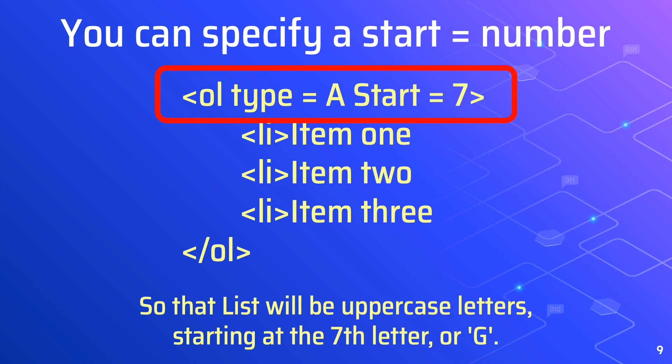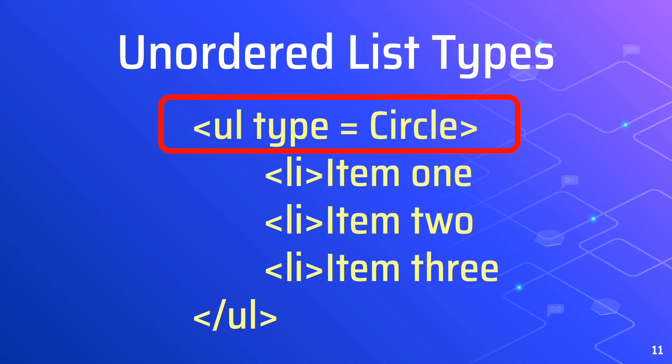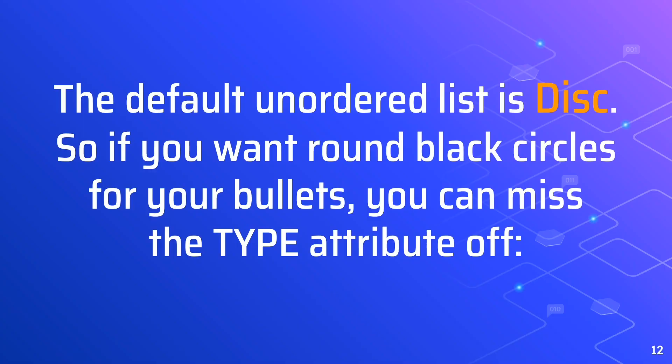There are three types of bullets you can use for an unordered list, and these are disc, circle, and square. You can use them like this: unordered list type equals circle, and you have the list items and then the closing UL tag. The default for unordered list is disc, so if you want round black circles for your bullets, you can omit the type attribute.